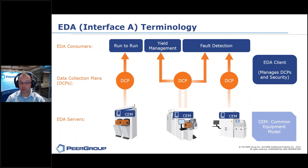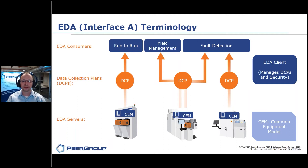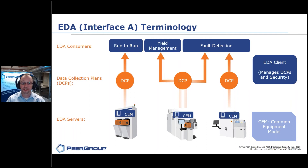You're going to see that in the demo — I'm going to show that to you in some depth. Once we have the CEM, which gives us a list of the available data, we're going to create a data collection plan. The data collection plan is typically an XML file, and it specifies the variables I want to collect, when I want to collect them, when to start and stop, and the frequency — how fast do I want to pull this data in?